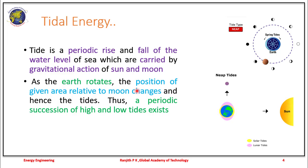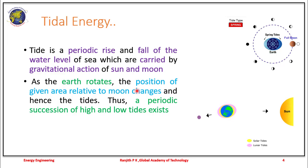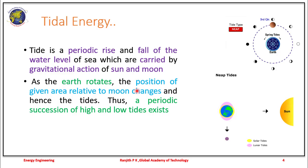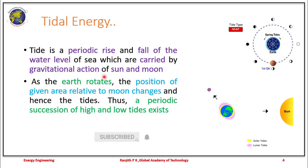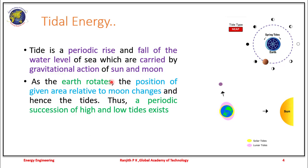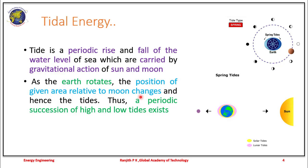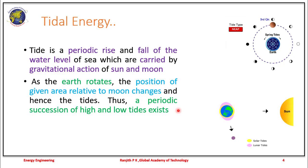In order to understand how we use tidal energy, we need to understand what a tide is. A tide is a periodic rise and fall of the water level, caused by the gravitational action of both the sun and the moon. As the earth rotates, the position of a given area relative to the moon changes, and hence the tides.